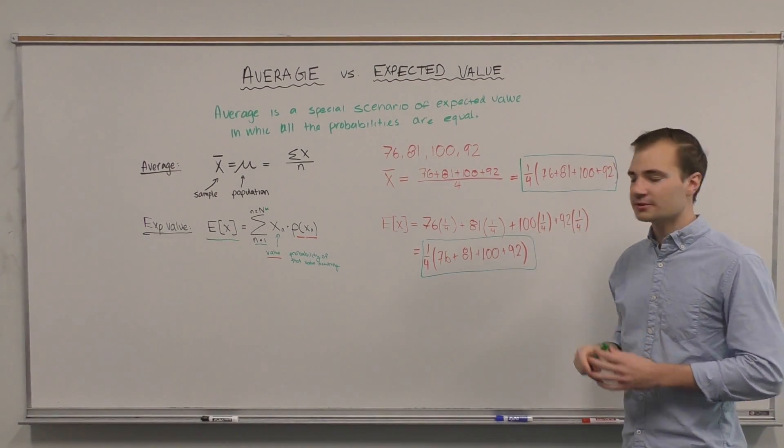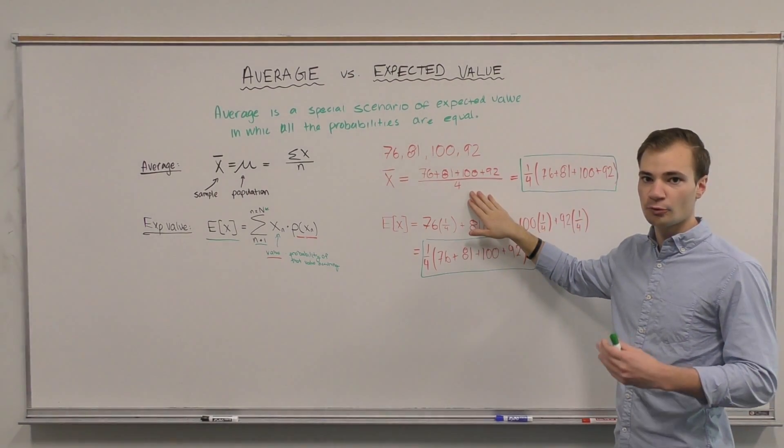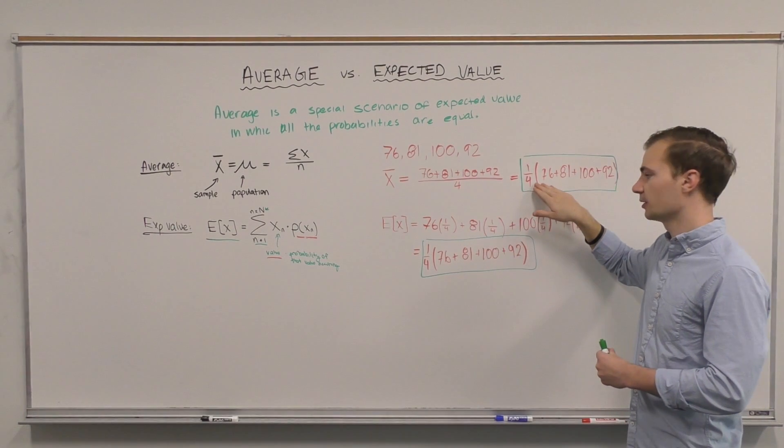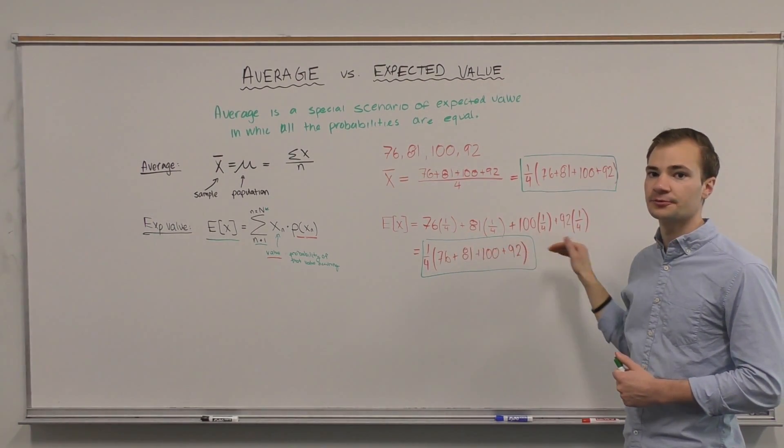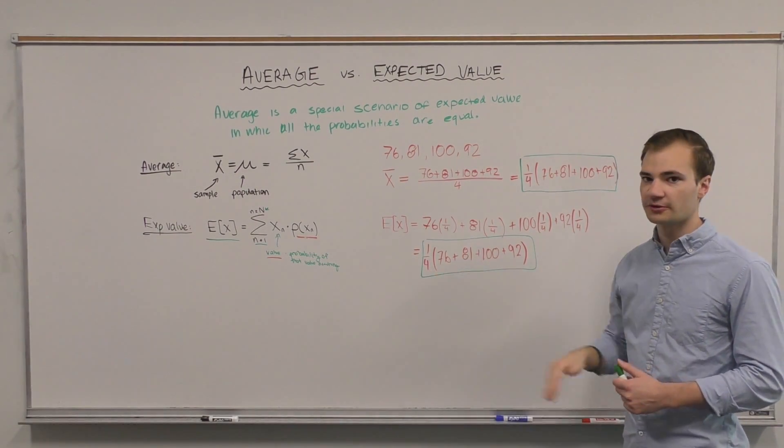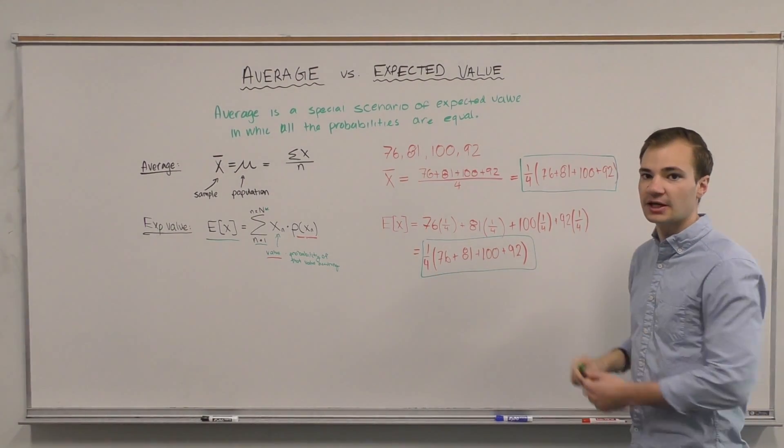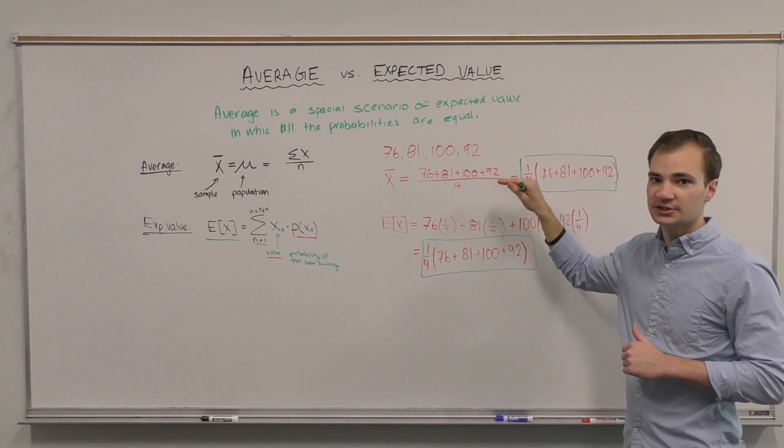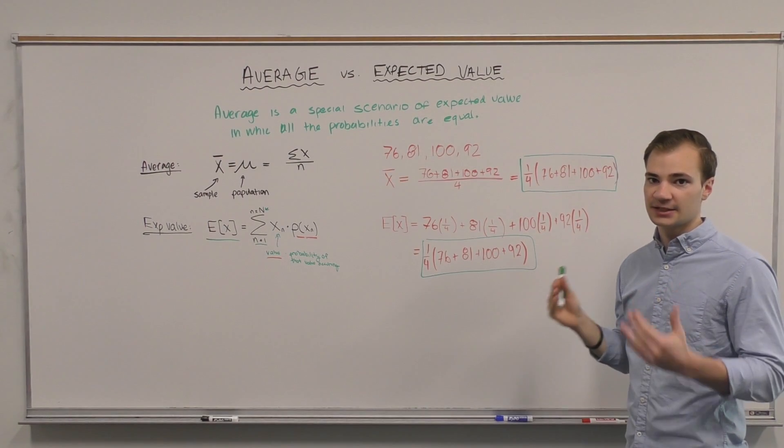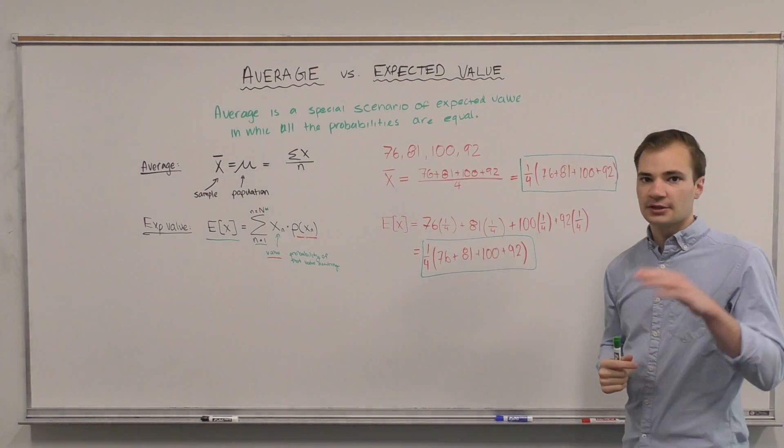And we see we get the same number. What we did here is we pulled one-quarter out from the bottom and bring it out front. Similarly, here we factored out one-quarter from each of our terms and pulled it up front, and we see that these two values are equal. Now remember there is an equal probability of pulling each one of these values, and that's why expected value is equal to average.